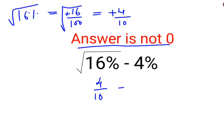So here we have root of 16% which can be written as 4 upon 10 and 4% can be written as what? 4 upon 100.